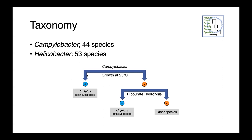Among our Campylobacter species, we can differentiate them based on their growth requirements. Campylobacter fetus, both subspecies — fetus fetus and fetus venerealis — will grow at 25 degrees. Campylobacter jejuni can be differentiated from other Campylobacter species by its ability to hydrolyze hippurate.